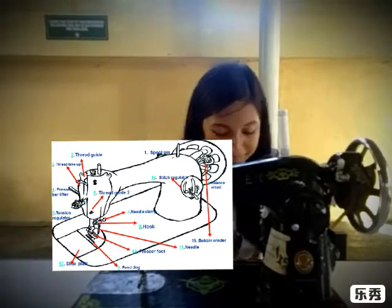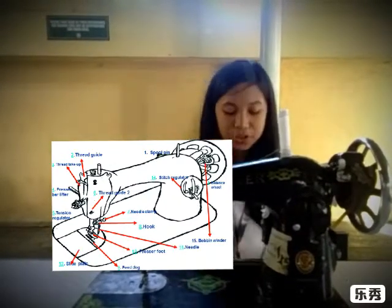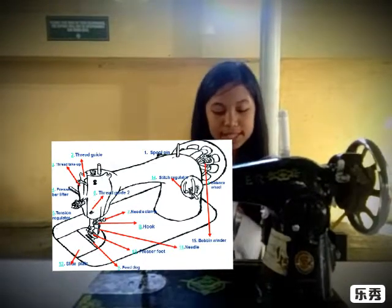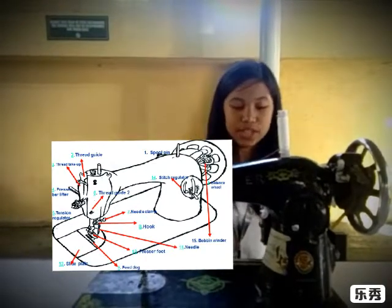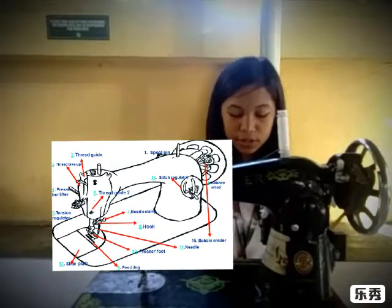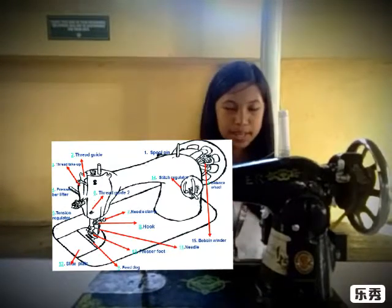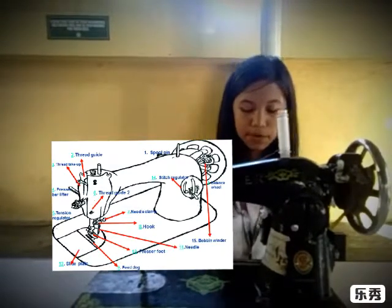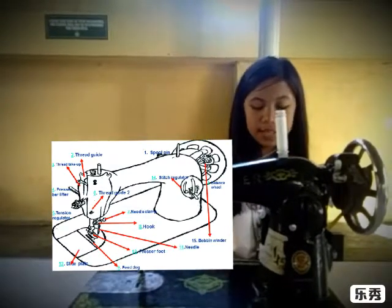Tension controls the looseness and tightness of stitches. Needle bar holds the needle in place. Needle clamp holds and tightens the needle.